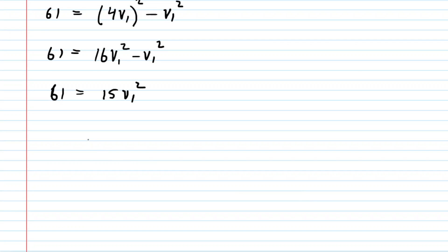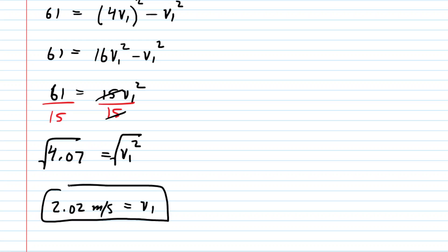Now just divide both sides of this by 15. The left-hand side becomes about 4.07. This is equal to v sub 1 squared. And then to finish off solving for v sub 1, just take the square root. And when you do that, you're going to get about 2.02 meters per second. That's going to be the speed of the water at the left end of the pipe. That was the correct answer for part A.